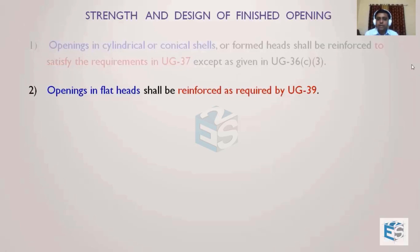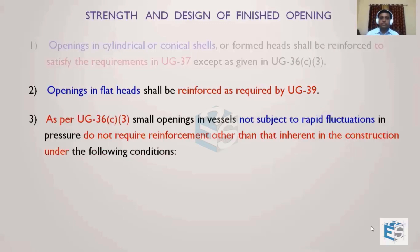For openings in flat heads or blind flanges, the reinforcement calculation methodology follows UG-39, not UG-37 directly. UG-39 may direct us to other clauses such as UG-3063 or UG-37 depending on the situation, but the starting point for flat head openings is always UG-39.